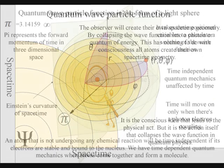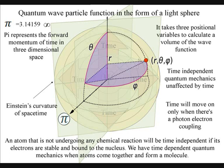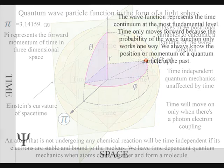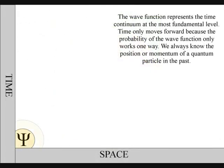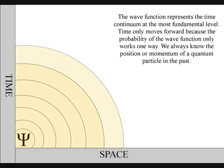The wave function represents a time continuum at the most fundamental level. Time only moves forward because the probability of the wave function only works one way. We always know the position and momentum of a quantum particle in the past.